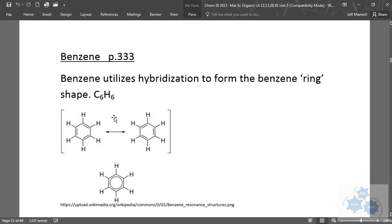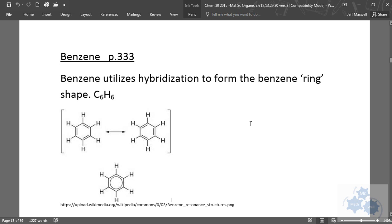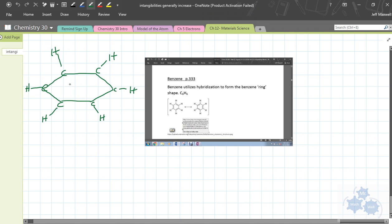We've got benzene and why benzene is the way it is. I want to explain this link here to you, this picture. Benzene utilizes hybridization to form the benzene ring. As we just talked about on page 334 of your text, in the benzene ring there are six orbitals that kind of look like p-orbitals. They're actually hybrid orbitals, but they end up overlapping.